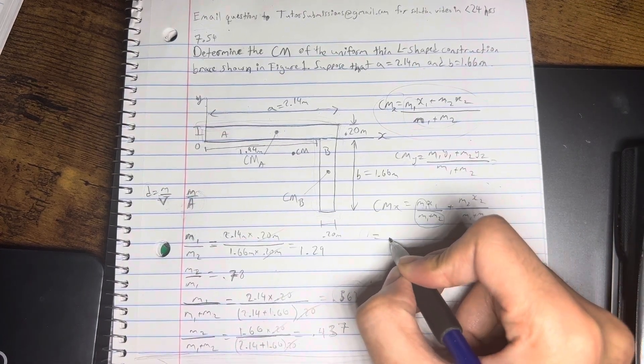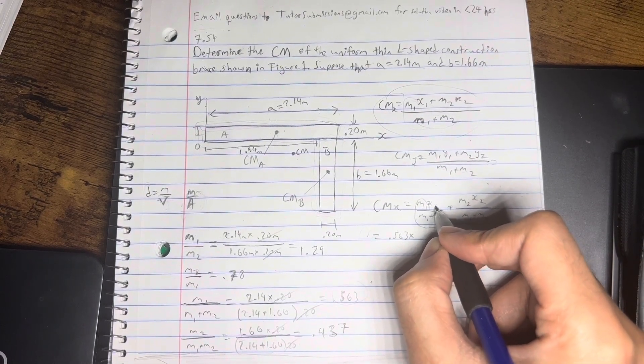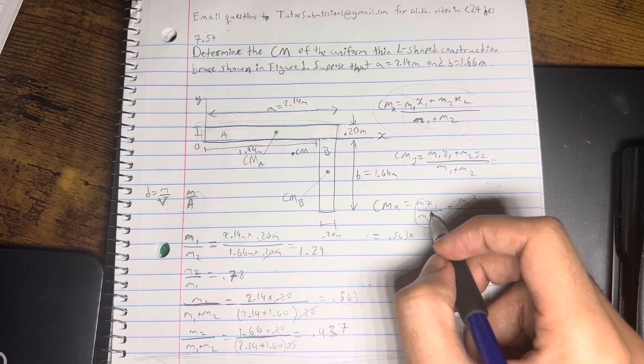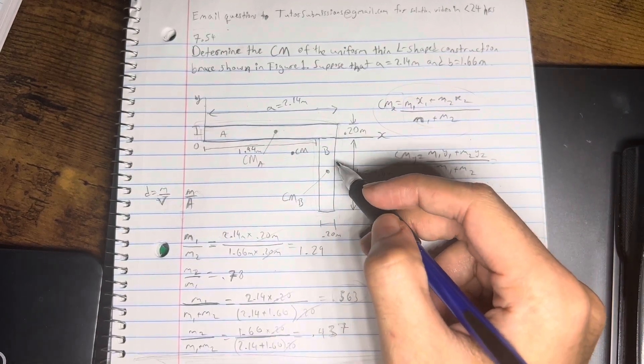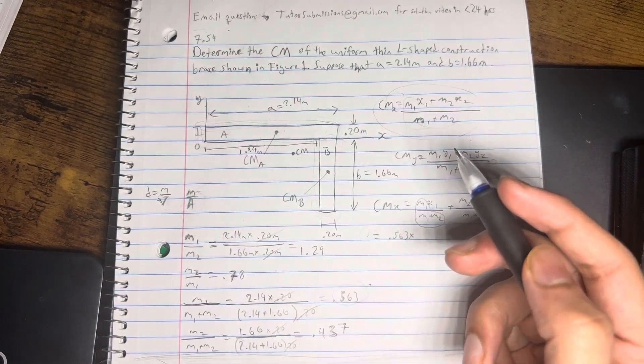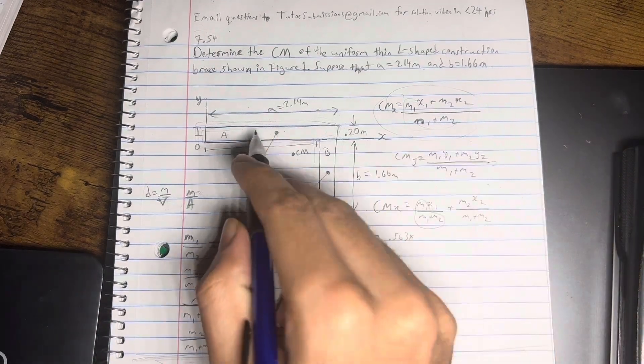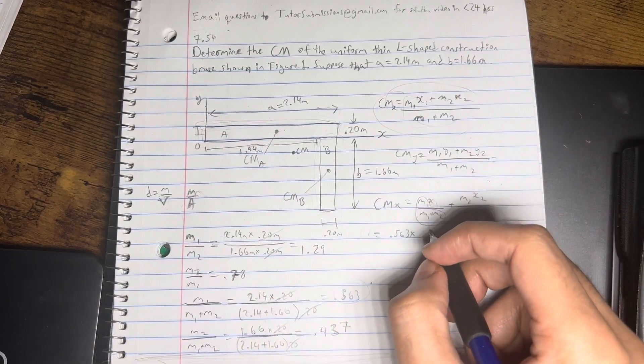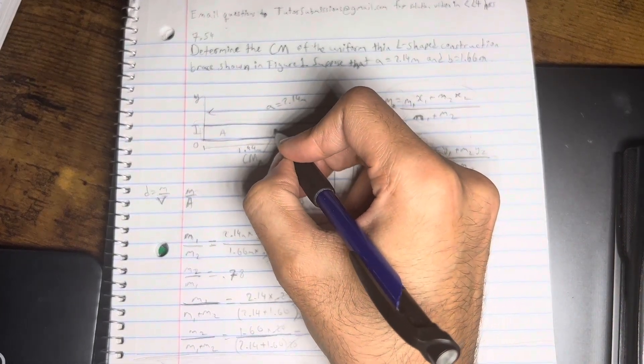And so, now I can go ahead and substitute all of this with the value I got here. So, I'm going to say 0.563. And so now I need to multiply this with the coordinate, the x-coordinate for the first block. And so, what this coordinate is referring to is the center of mass for block A. So, now, because we've sectioned it off into two separate blocks here, finding the center mass for each of these individual blocks is pretty easy. It's just the length and width divided by 2. So, this whole length is 2.14. So, the x-coordinate for that is just 2.14 divided by 2.